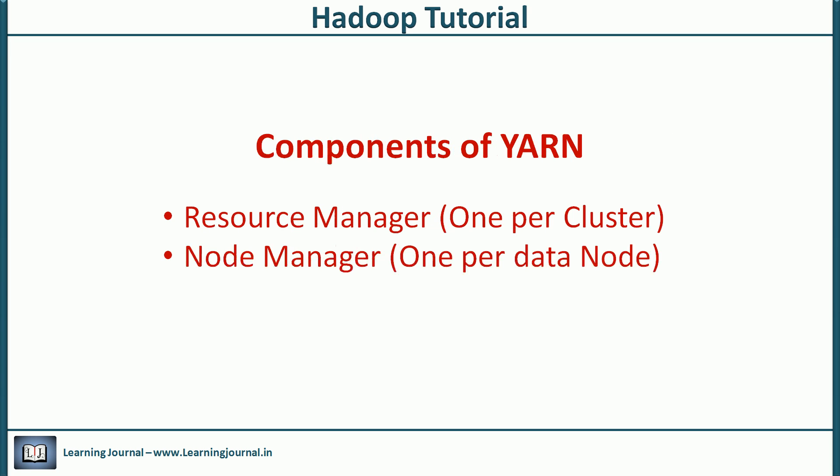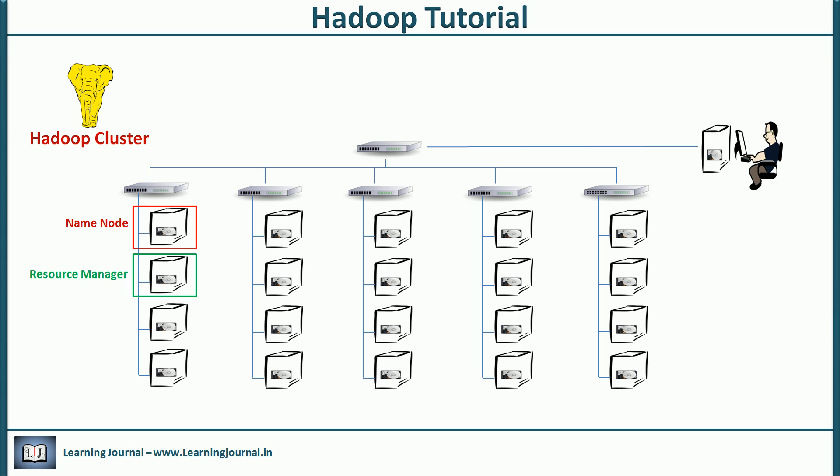YARN is composed of two long-running daemons in your cluster. There is one Resource Manager per cluster, so in our Hadoop cluster we have one Resource Manager. It's a master service and usually deployed in a high availability configuration, similar to NameNode high availability. In your production cluster, you may have one active Resource Manager and a standby Resource Manager.